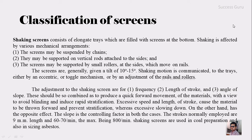The next one is the shaking screen, which consists of elongated trays filled with screens at the bottom. The shaking is effected by various mechanism arrangements. The screen may be suspended by a chain, or suspended on a vertical rod attached to a slide, and the screen may be supported by small rollers at the side which move on the rail.